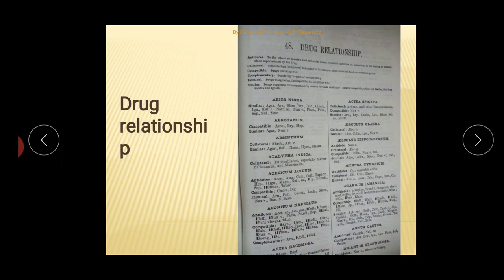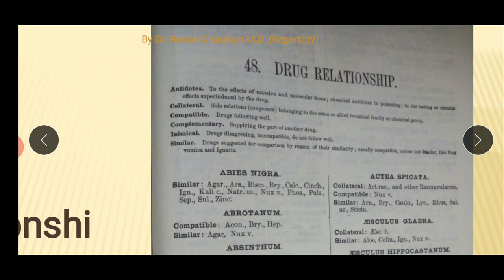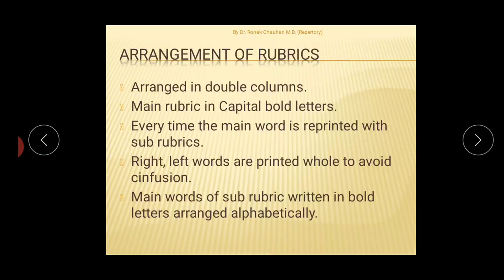The Drug Relationship chapter provides explanation of terminologies such as antidotes, collateral, compatible, complementary, and inimical remedies, followed by a list of drug relationships for each medicine.